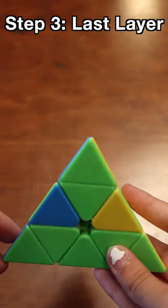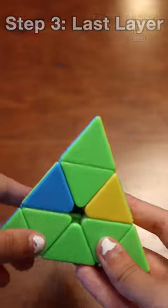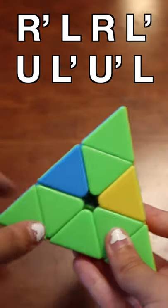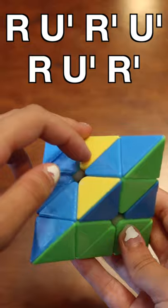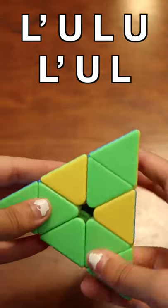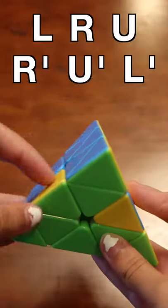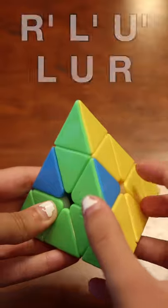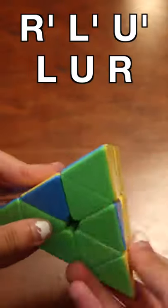The final step is to get the last layer. There's five cases. First we have two edges flipped. Next we have the clockwise three-edge cycle, the counterclockwise three-edge cycle, the weird case where the edges are on the left, and the weird case where the edges are on the right.